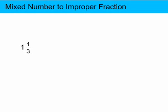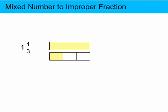So this mixed number, 1 and 1 third, represents 1 whole plus 1 third of the whole. So to convert it to an improper fraction, you change the whole part to fraction parts using the same fraction part as the fraction, which in this case is 3.